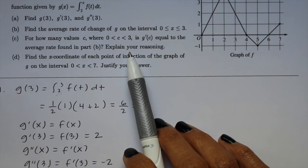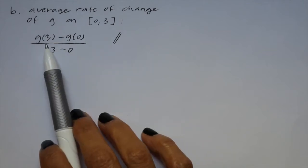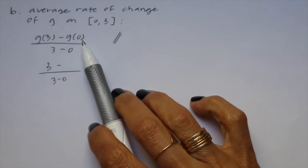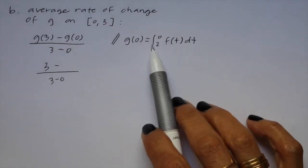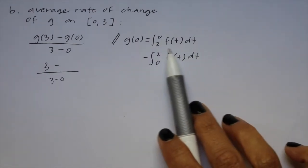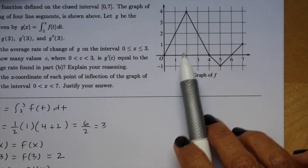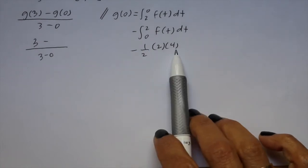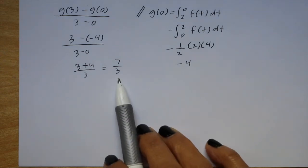Part b says find the average rate of change of g on the interval from 0 to 3. The average rate of change is g of 3 minus g of 0 over 3 minus 0. We already have g of 3 from part a, so we need g of 0. g of 0 is the integral from 2 to 0 of f of t dt. Flipping the limits brings out a negative, giving negative the integral from 0 to 2 of f of t dt. That area is a triangle with base 2 and height 4, so g of 0 equals negative 4. The average rate of change of g on the closed interval from 0 to 3 is 7 thirds.